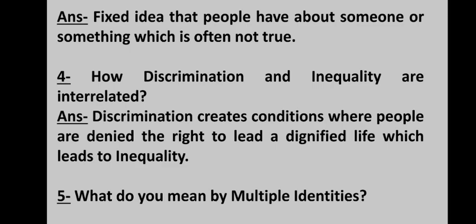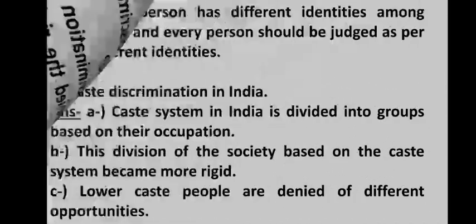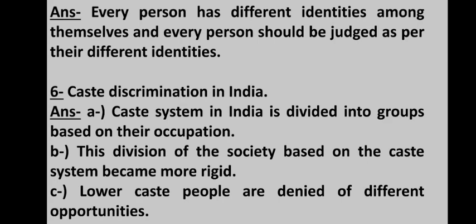The fifth topic is multiple identities. Prejudice and stereotypes affect human relationships. These two elements influence people's thinking as they start forming opinions about others based on a particular identity that the individual possesses. But no one should make a perception about someone based on a single identity — the different identities of every person should be considered before making a particular mindset.